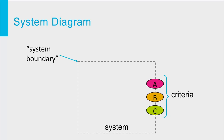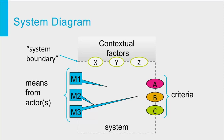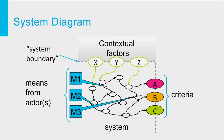We assume the problem owner has certain means through which he or she can deliberately influence system behavior, and we represent these on the left-hand side of the diagram. There will generally also be factors that influence system behavior but are not under control of the problem owner — we call these external or contextual factors and place them at the top of the diagram. By convention we portray the means as rectangles and the other factors as ovals. It is useful to indicate how the means and outside factors may affect the criteria, and therefore we portray the causal pathways and system factors through which the means and external factors affect the criteria inside the box.